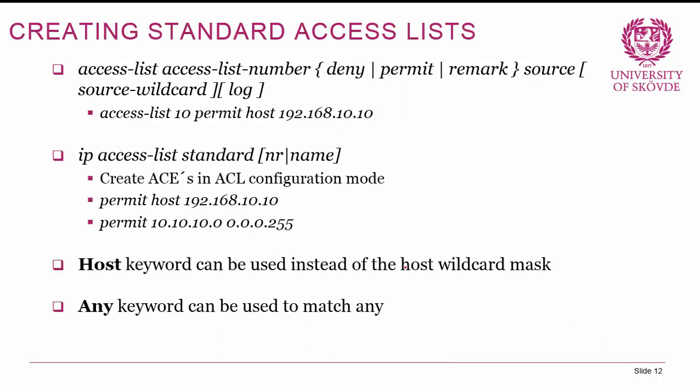To create standard ACLs we can use the command 'access-list' followed by an access list number, then deny, permit, or remark, and then the source address and wildcard mask. Alternatively, I prefer 'ip access-list standard' followed by a number or name, which puts us into ACL configuration mode where we just type permit or deny statements. The keyword 'host' can be used instead of a host wildcard mask, and 'any' matches everything.